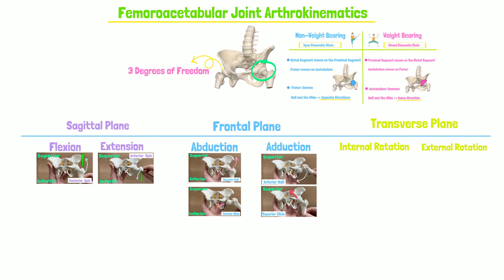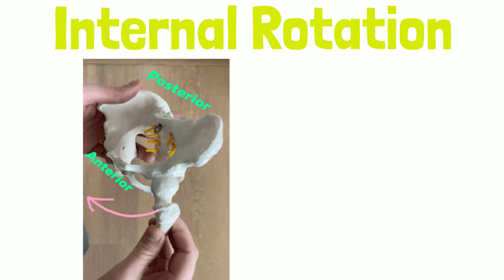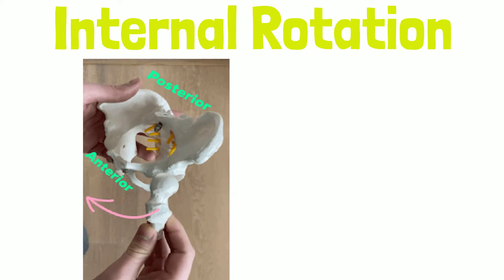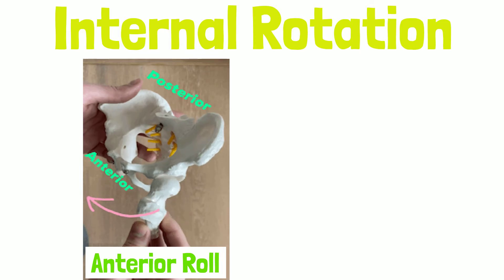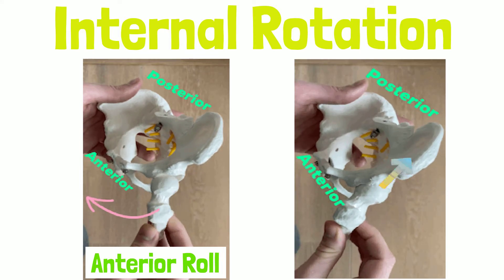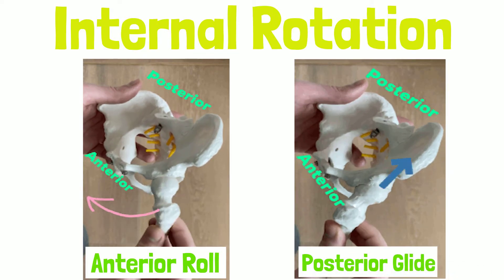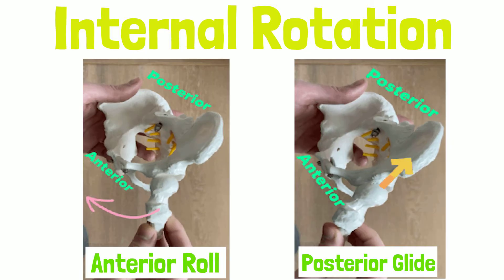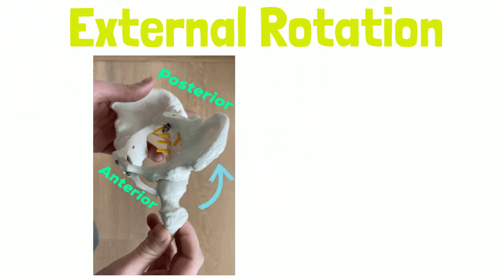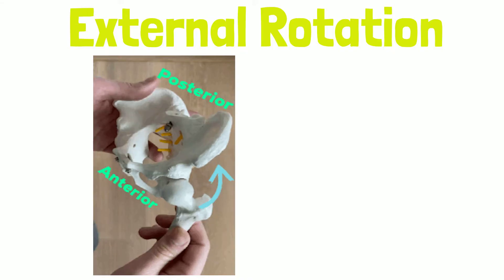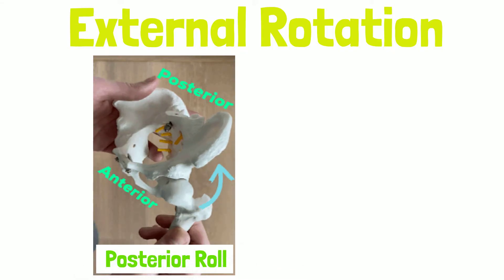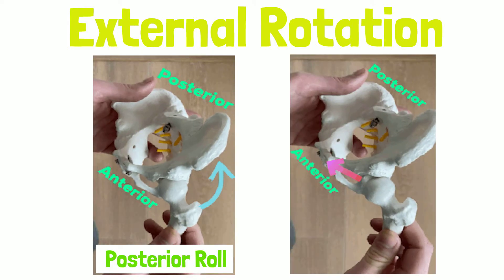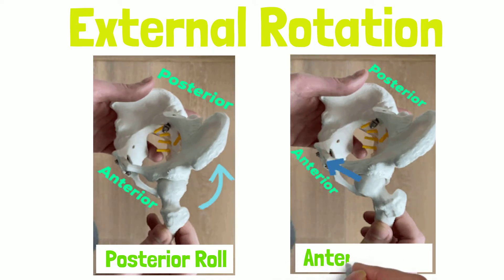And last but not least, the transverse plane. During femoroacetabular internal rotation, the femur rolls anterior and glides posterior. During femoroacetabular external rotation, the femur rolls posterior and glides anterior.